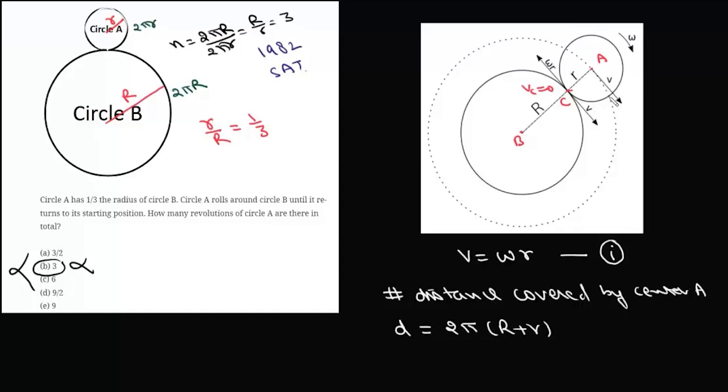Since linear velocity is V, time taken will be simply distance upon velocity, so it is d by V, or 2π(R+r) upon V. Now we will multiply and divide everything with small r.